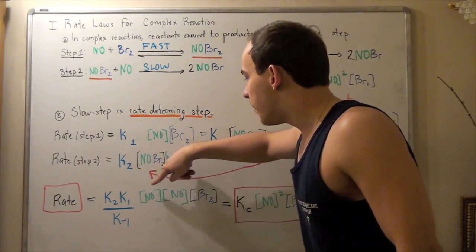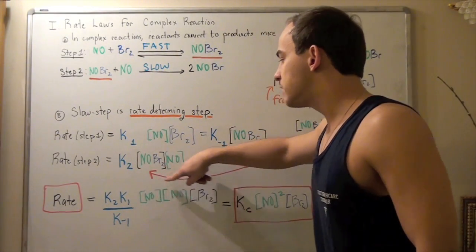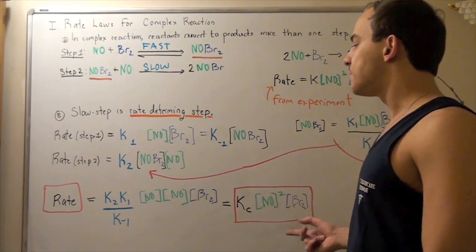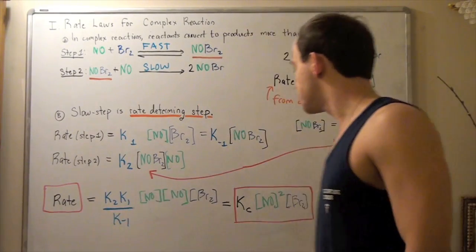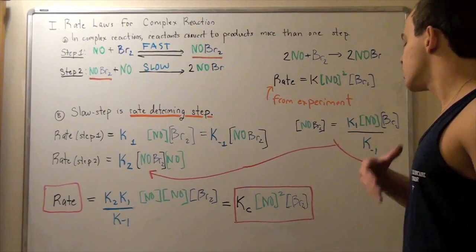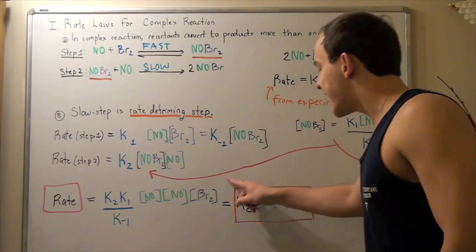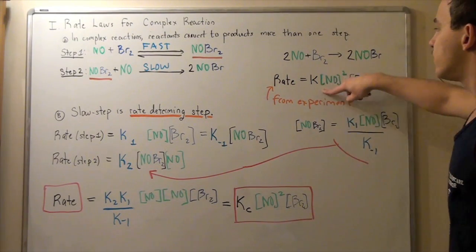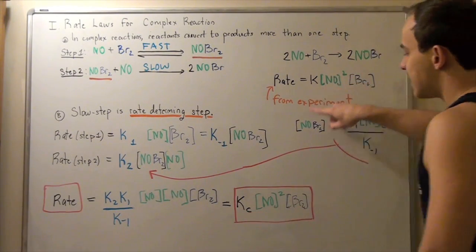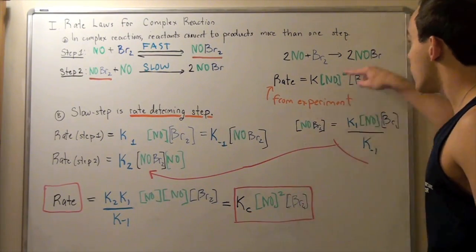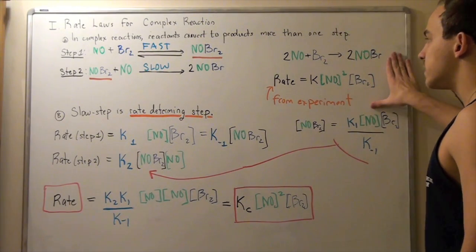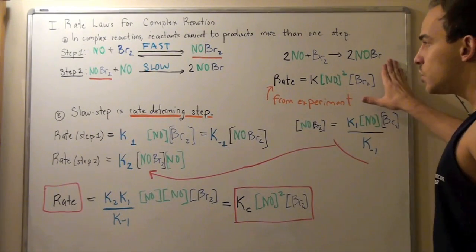We can combine the NO terms to get an exponent of two, and let K2 times K1/K-1 be a new constant Kc. Our rate becomes Kc times [NO]² times [Br2], which is exactly what we get from experiments: K times [NO]² times [Br2]. Our rate laws coincide.